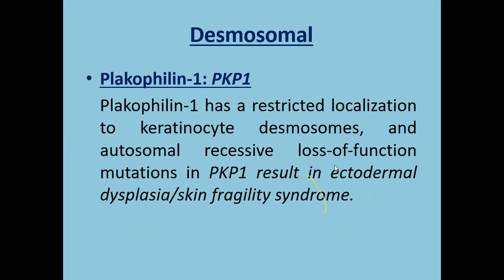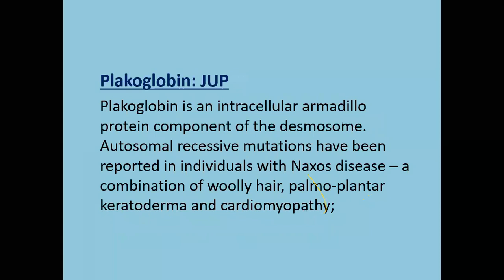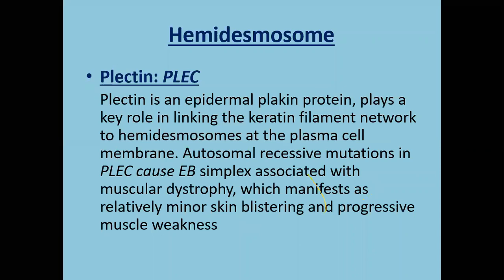Plakophyllin is seen in ectodermal dysplasia and skin fragility syndrome. Desmoplakin is a major structural component of desmosomal plaques, and autosomal dominant mutation will result in palmoplantar keratoderma and trauma-prone blistering on palms and weight-bearing areas. Plakoglobulin is seen in a syndrome associated with EB, woolly hair, palmoplantar keratoderma, and cardiomyopathy.